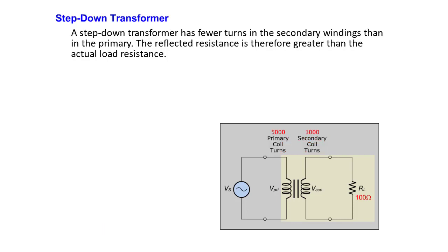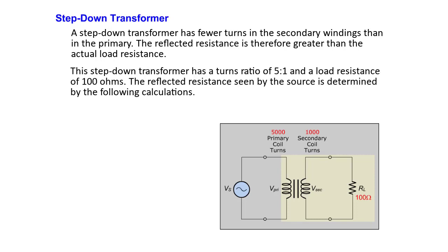A step-down transformer has a turns ratio of 5 to 1 and a load resistance of 100 ohms. The reflected resistance seen by the source is determined by the following calculations.